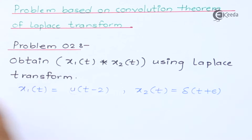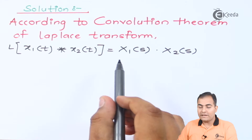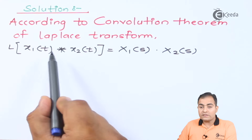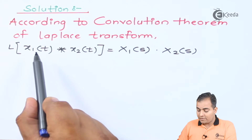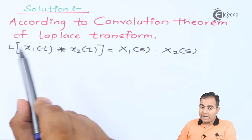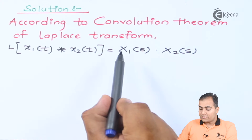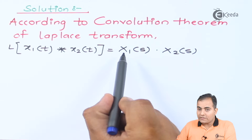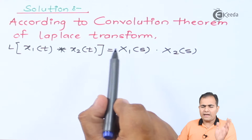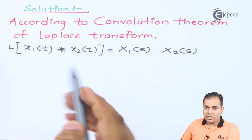According to the definition of the convolution theorem of Laplace transform, whenever two functions convolve with each other and we want to find the Laplace transform, first find the Laplace transform of both functions separately and then multiply them.